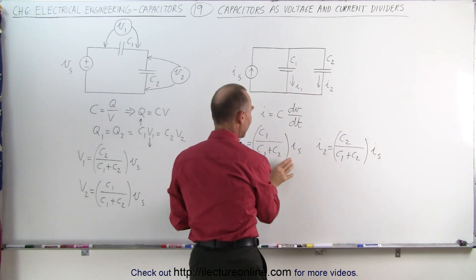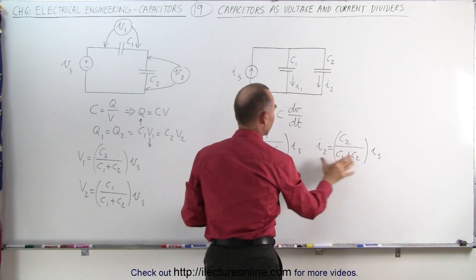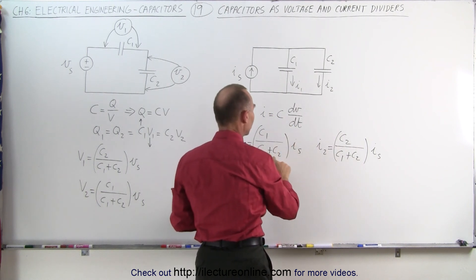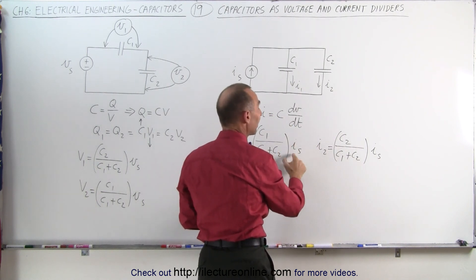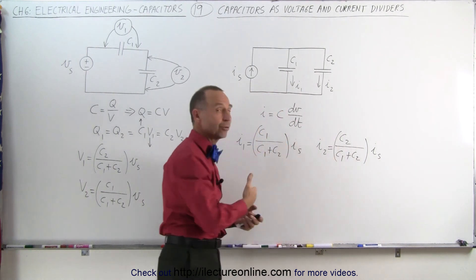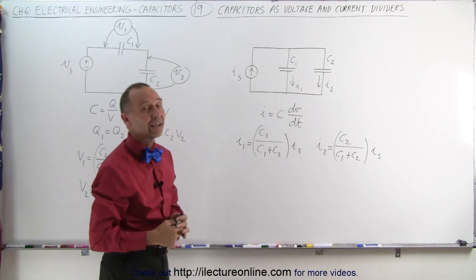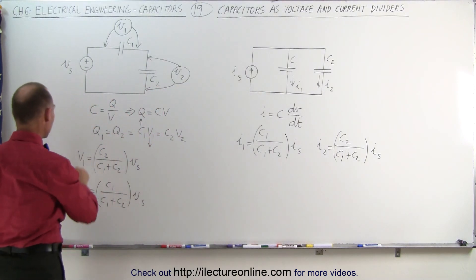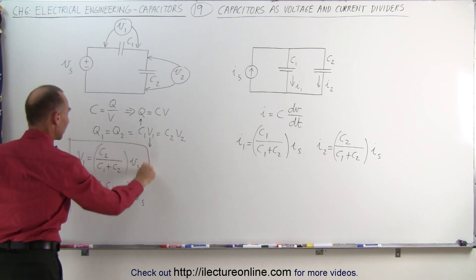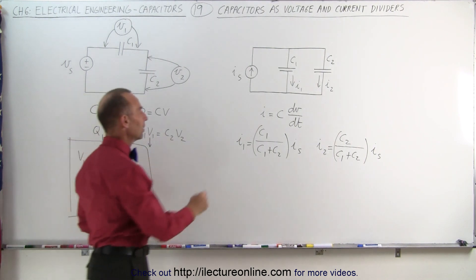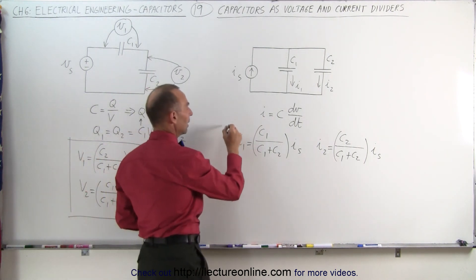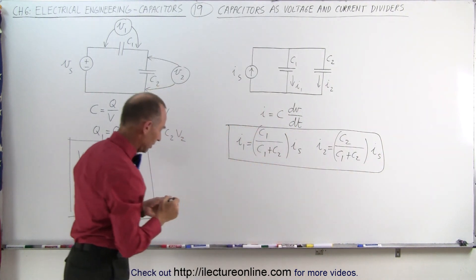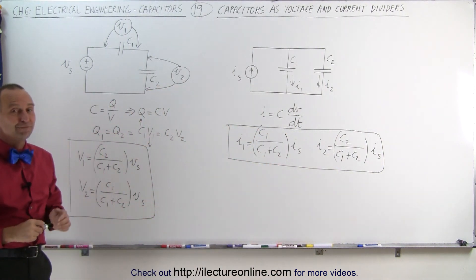Notice that when you add these two together, you get (C1 plus C2) divided by (C1 plus C2) times I_S, which means the total current is still I_S — confirming the equation is correct. So here is how we calculate the voltage and the current for capacitive dividers. That's how it's done.